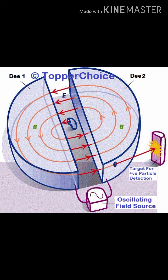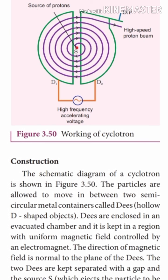The diagram of the cyclotron is shown. The parts of the diagram include high frequency accelerating voltage, a high speed proton beam coming out, and a source of protons placed at the center of the two Ds. Now we see the construction of a cyclotron. The schematic diagram is given in figure 3.50.